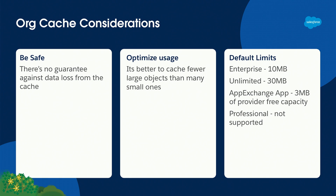Optimized usage — per Salesforce documentation, it's better to store a few large items than a whole bunch of small items. Also worth calling out are the default limits for different org types. The most interesting one for us was AppExchange apps getting three megabytes of provider-free capacity. Going into a customer's org, you're not sure what org type they'll have or how much of the cache might be utilized by other AppExchange apps or custom code. Being able to install in a subscriber org and get three megabytes of guaranteed capacity is very useful.